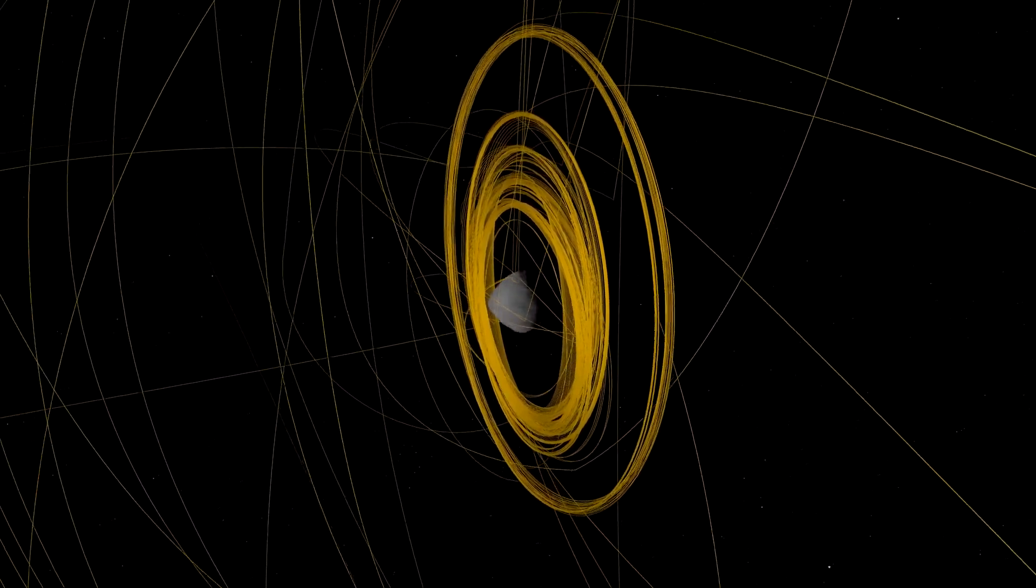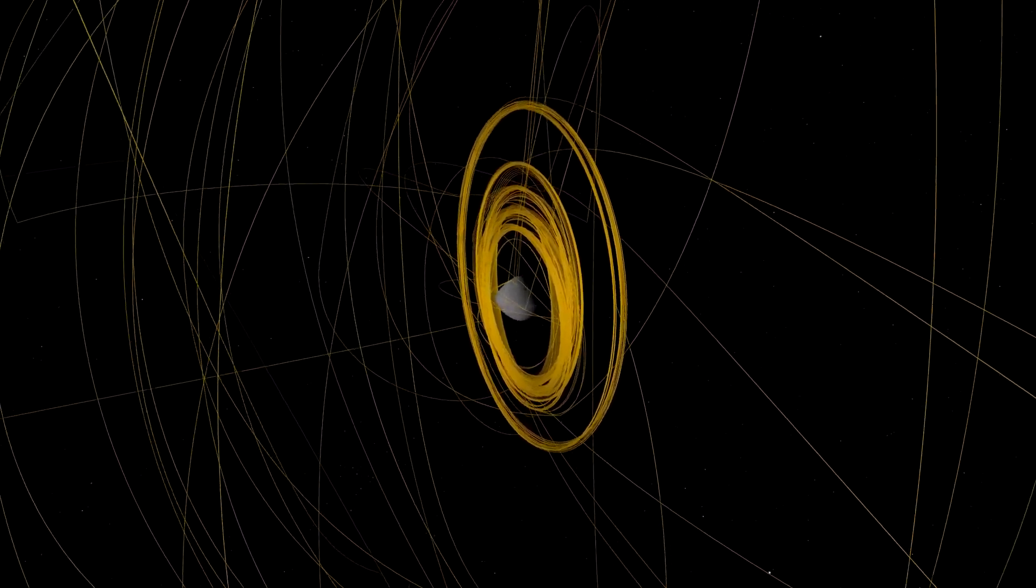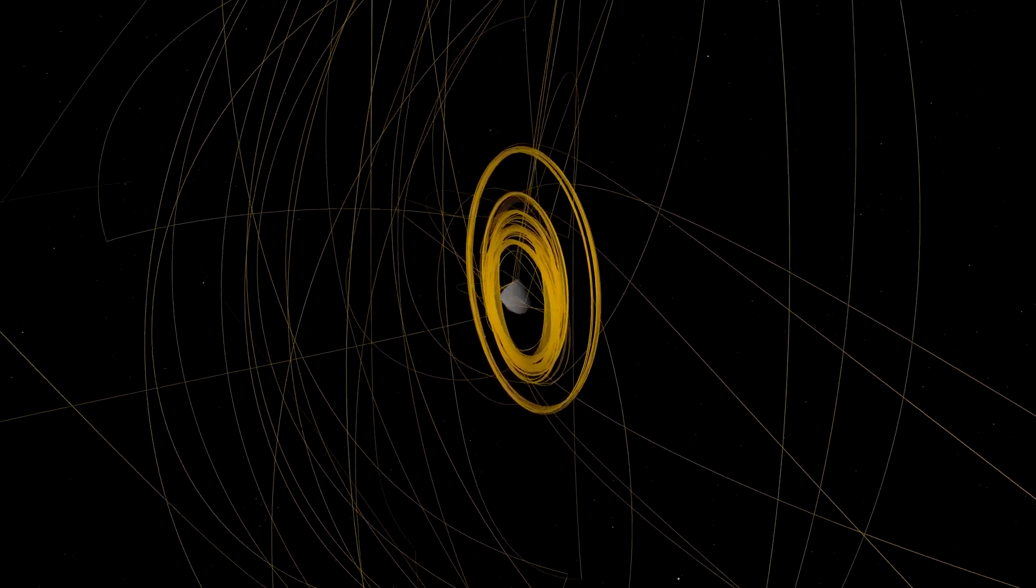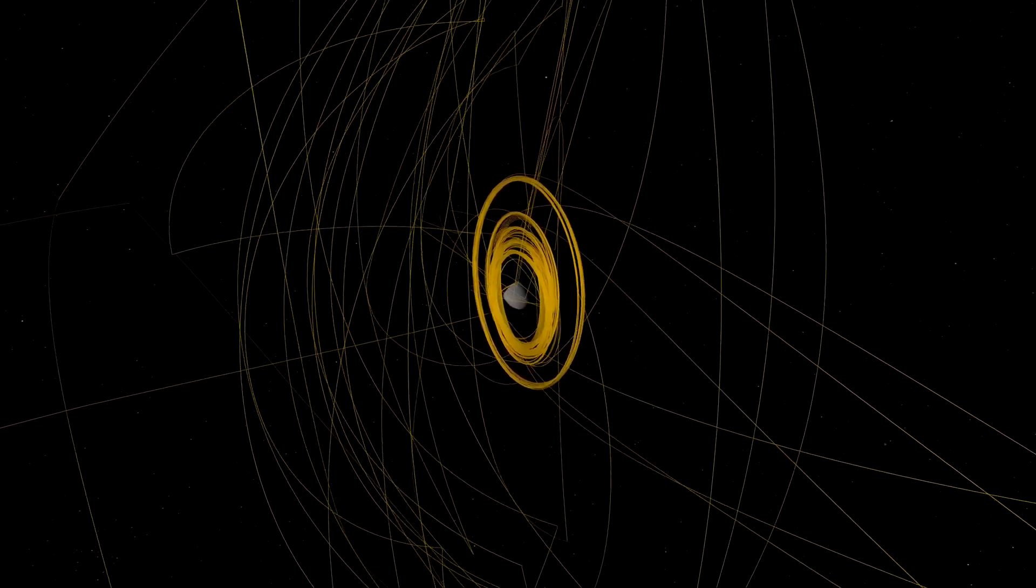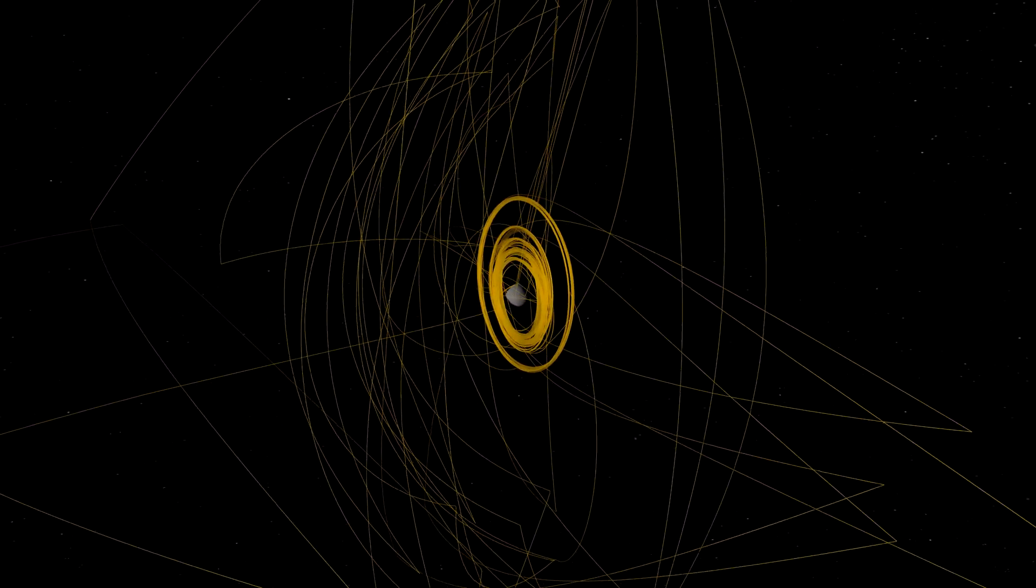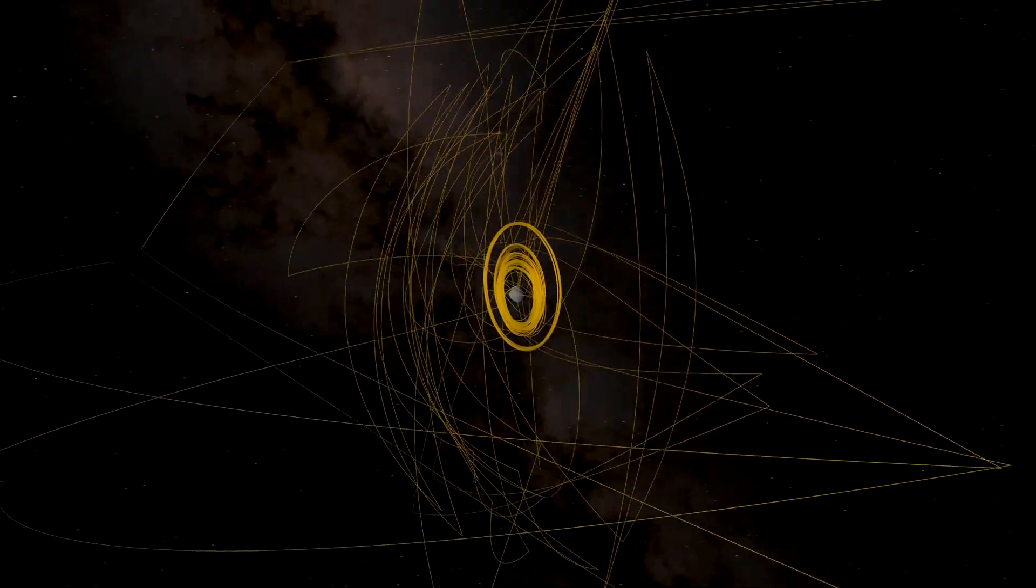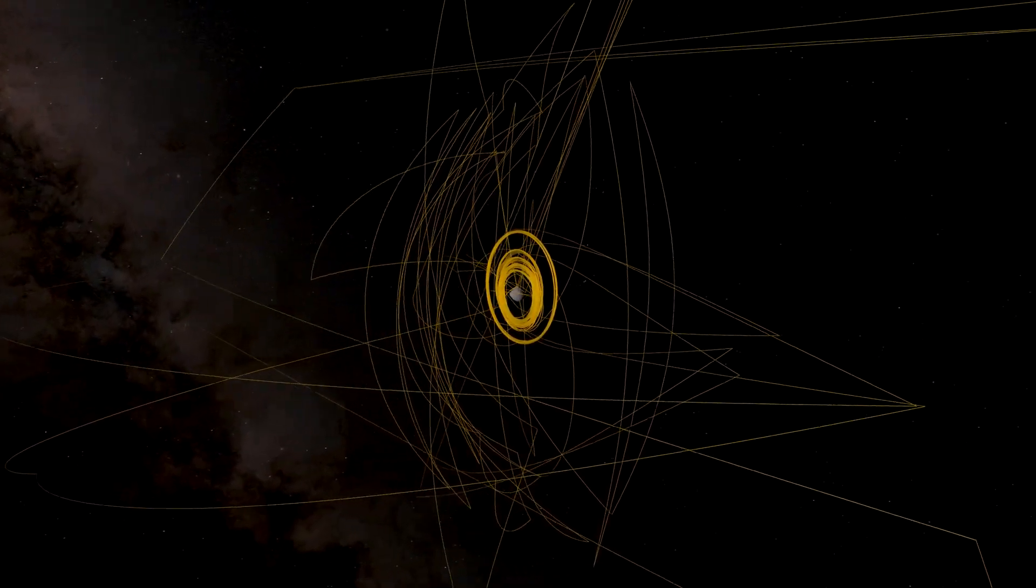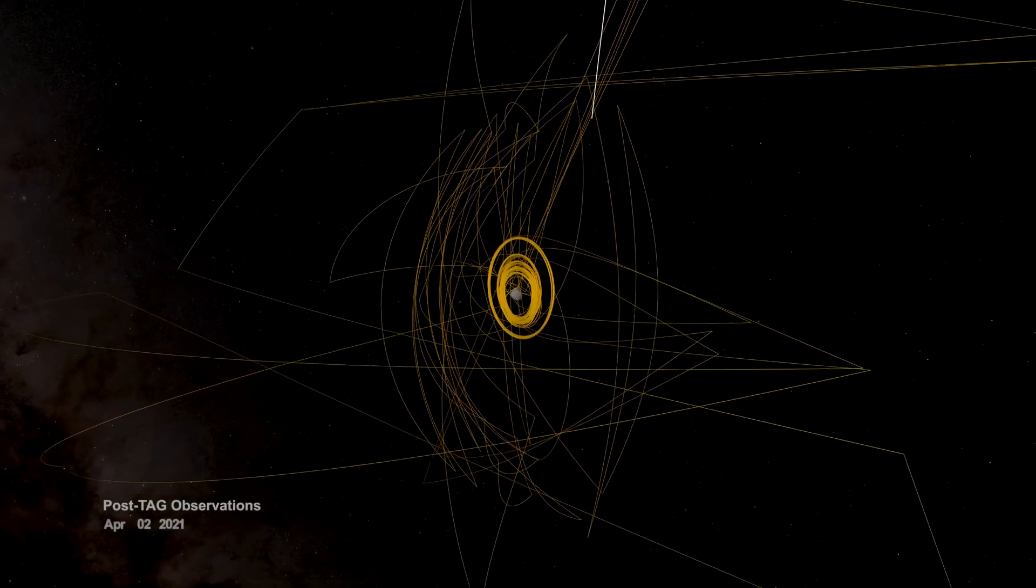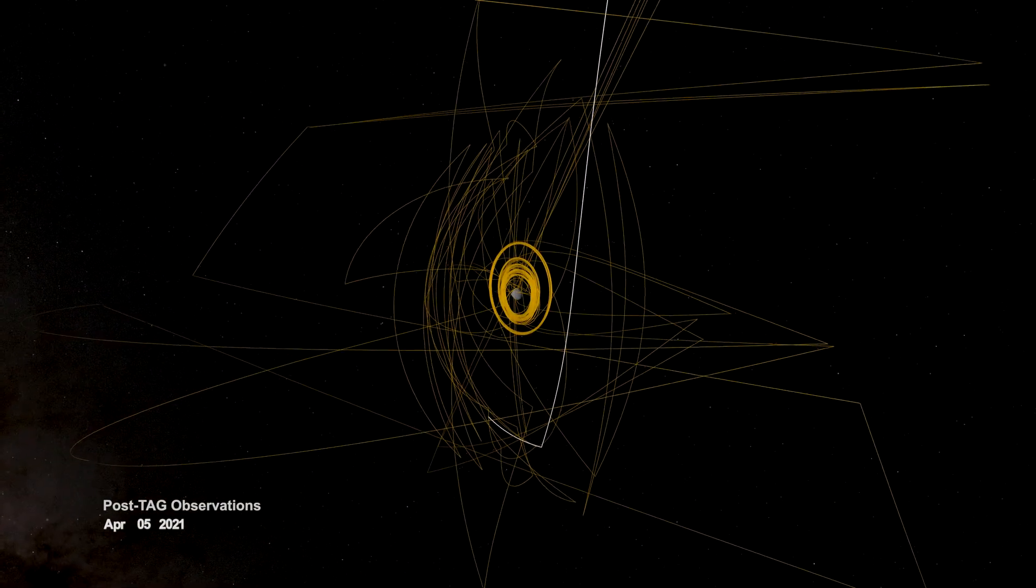Following TAG, the spacecraft drifted to a safe distance away from Bennu. By the end of October, mission controllers determined that it had exceeded its goal of collecting 60 grams of asteroid material. They directed it to stow the sample in preparation for return to Earth.